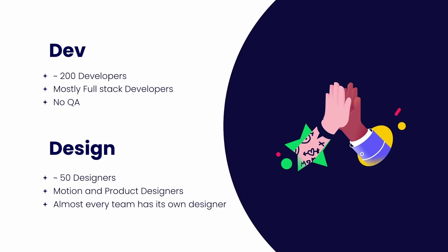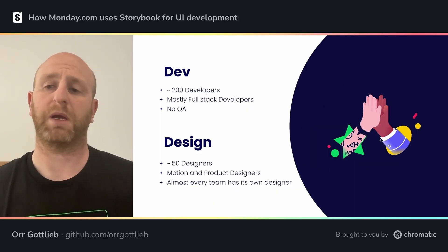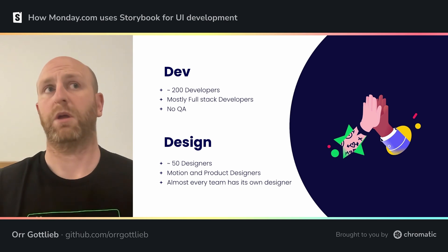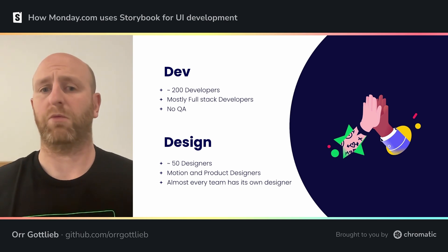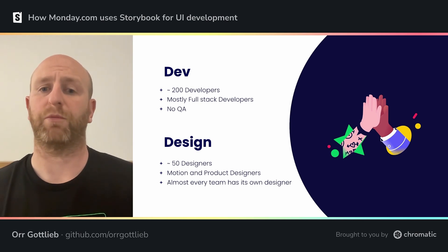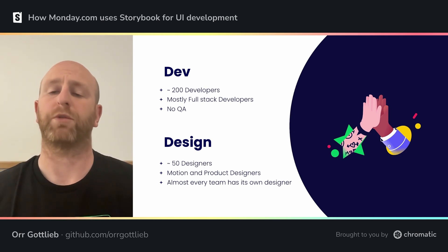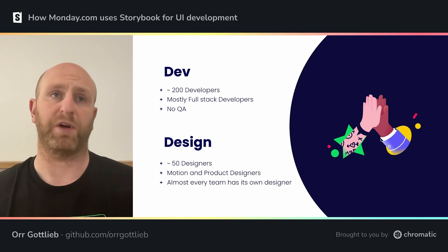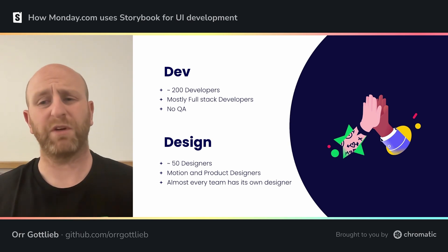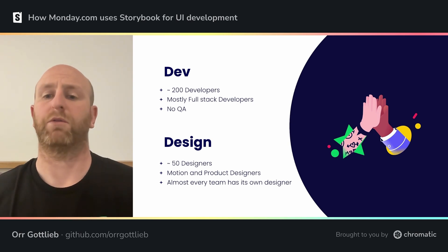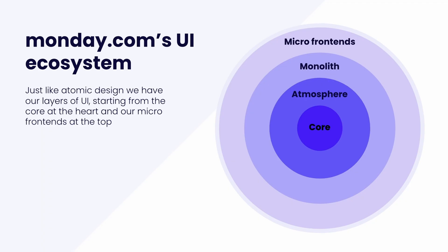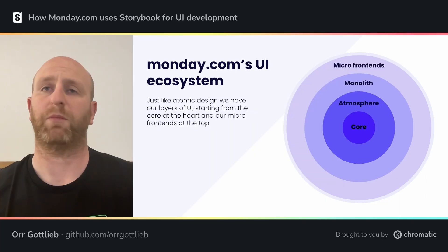We are around 200 developers, and most of us are full stack developers, which means we do everything from the backend to the frontend, and we don't have QA. We expect full ownership from our developers to do QA by themselves. We have 50 designers, meaning almost every team has their own designer, both motion and product designers. We are huge believers in atomic design and try to structure our UI ecosystem in the same manner.